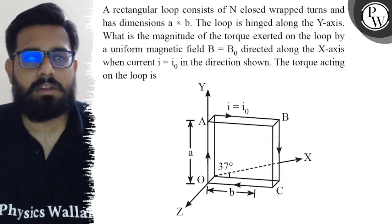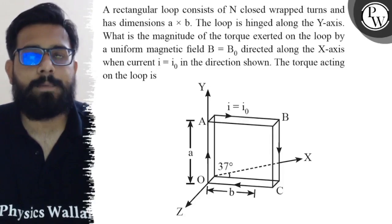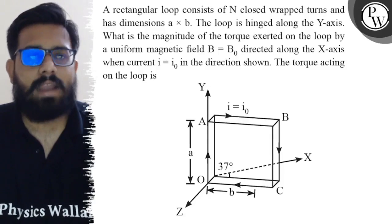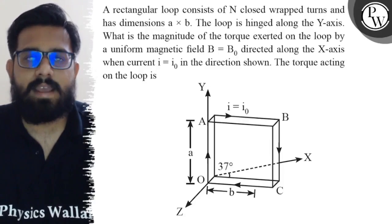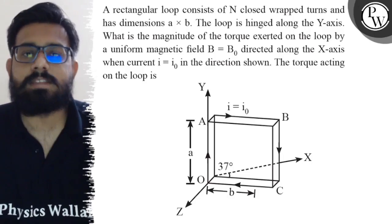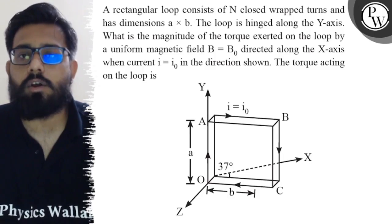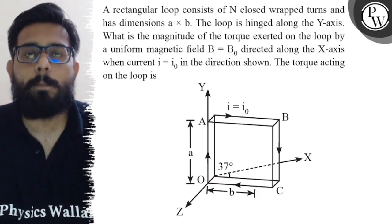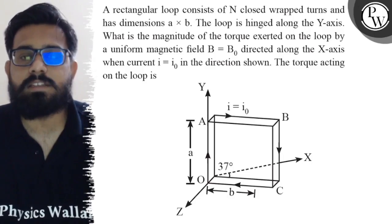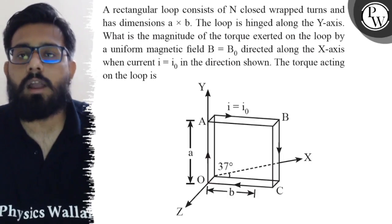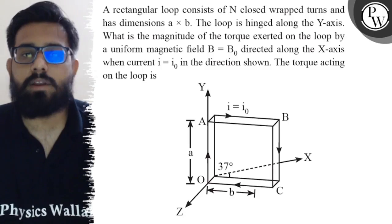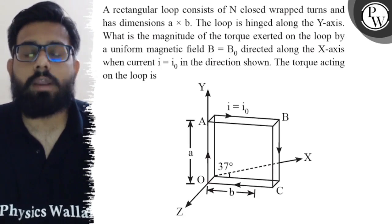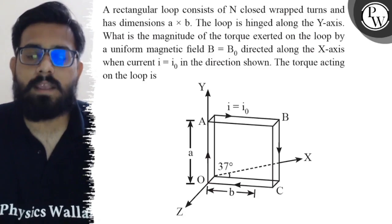Hello! So let's see the question. A rectangular loop consists of n closed wrap turns and has a dimension of a cross b. The loop is hinged along the y-axis. What is the magnitude of the torque exerted on the loop by a uniform magnetic field B equals B0, directed along the x-axis? When the current i equals i0, the torque acting on the loop is: